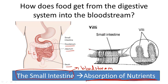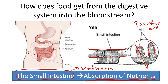Inside the small intestine is a very interesting set of structures called villi. Villi line the entire length of the small intestine, providing an increased surface area. This increased surface area is key to allowing the passage of as many nutrients as possible out of the small intestine and into the blood.